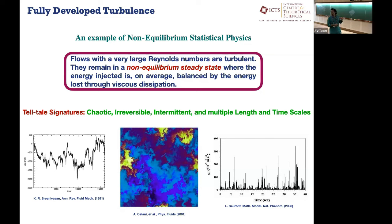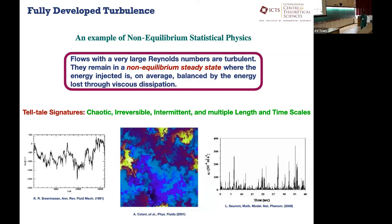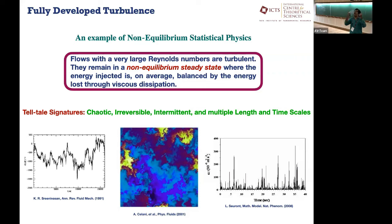Let me explain what we mean by intermittent. This is a measurement from a wind tunnel of the rate at which energy gets dissipated in a high Reynolds number flow. For most systems, you'd assume dissipation is roughly constant — inject energy constantly, dissipate energy constantly. Turbulence is a very special beast: what you actually measure are strong spikes followed by very quiescent behavior. There are long time windows where nothing happens, then you get a big spike in dissipation. This on-and-off behavior is one way to think about intermittency.